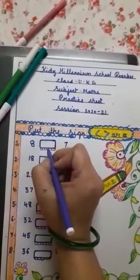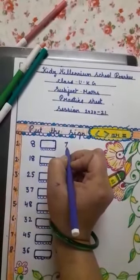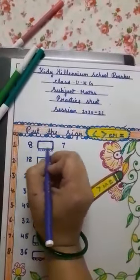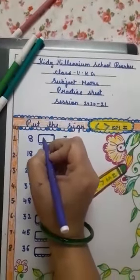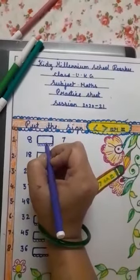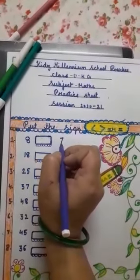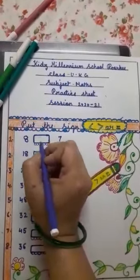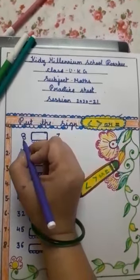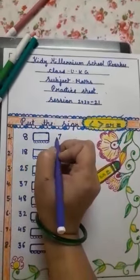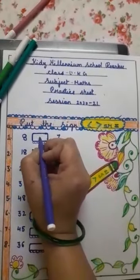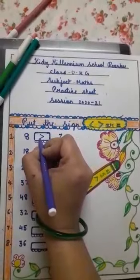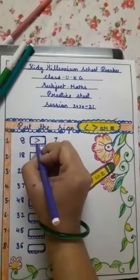First question: 8 blank space 7. We will compare both numbers and find out which number is bigger. 8 is greater than 7. On the basis of our counting, we know that 8 is greater than 7, so here the greater than sign will come. This is the greater than sign.